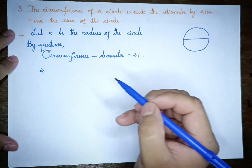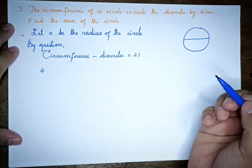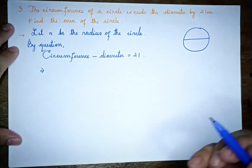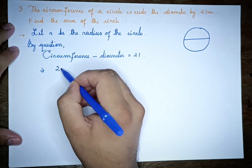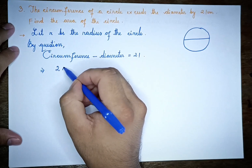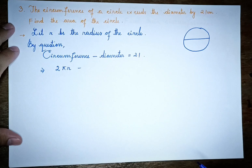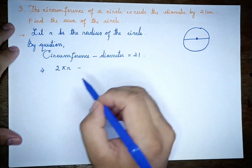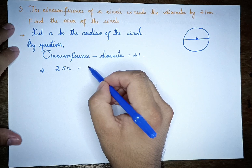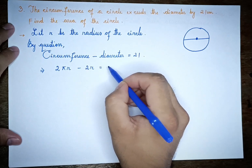This implies: Circumference = 2πr, and Diameter = 2r. So the equation becomes: 2πr minus 2r equals 21.